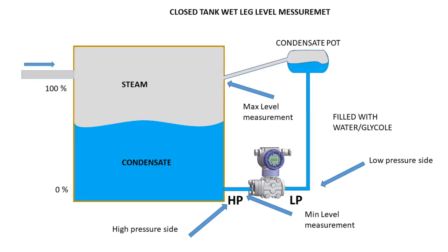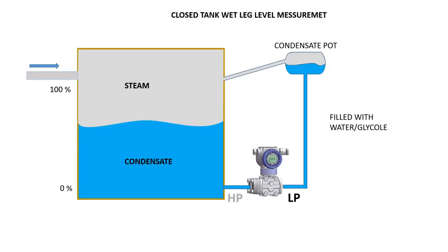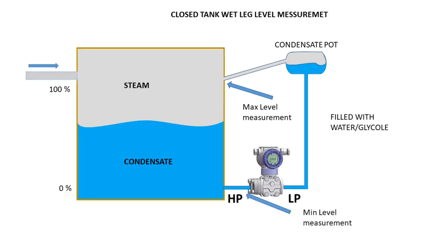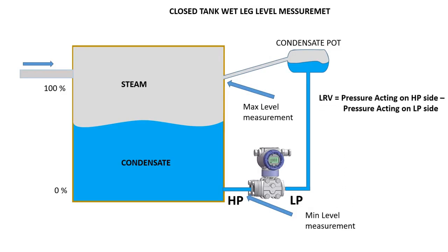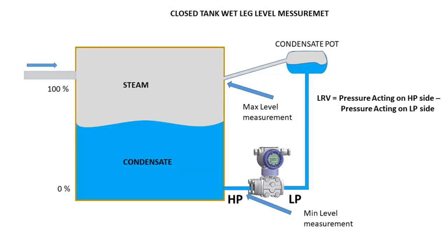It will minimize the error and give an accurate reading. So how do we calculate the calibration range of the transmitter? First we have to connect the impulse line to the transmitter. The high pressure side of the transmitter connects to the bottom of the tank, and the low pressure side connects to the top of the tank through a condensate pot. For measuring level, we have to calculate the LRV and URV for the transmitter. The equation is: LRV equals pressure acting on the HP side minus pressure acting on the LP side.